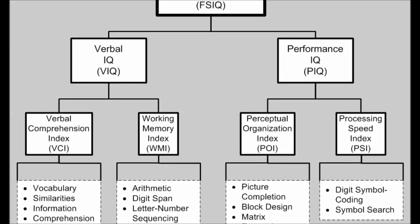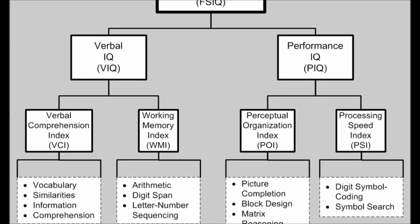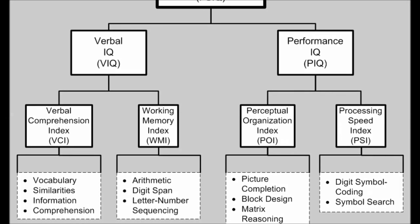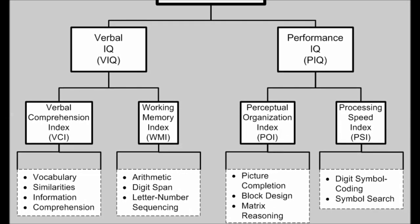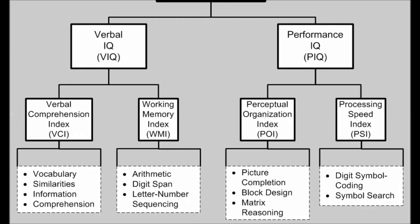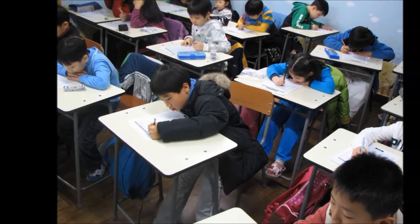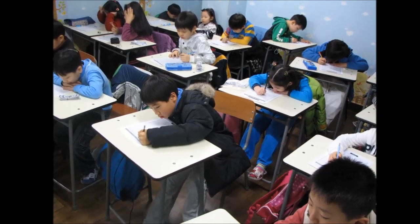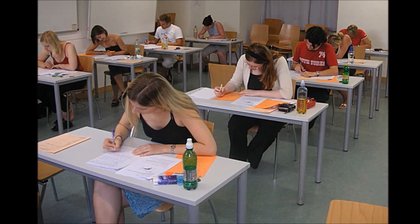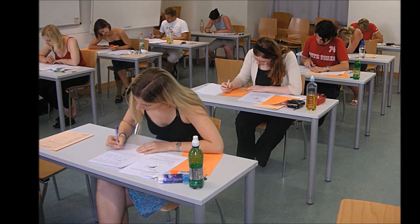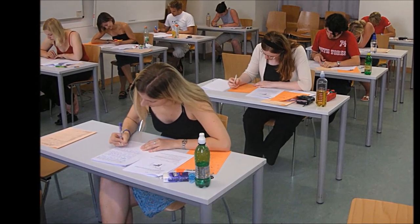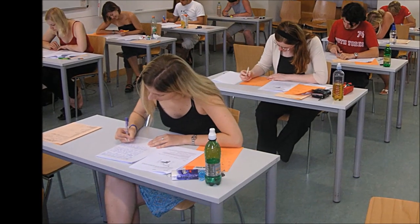The IQ scores of most people over the age of 10 do not change much throughout their lives, but there are some people who score differently when they retake these tests. In 1921, a researcher by the name of Lewis Terman started a study known as the Genetic Studies of Genius that tracked the IQ scores of 503 children over time. When these children were retested on the Stanford-Binet Test during high school, the IQ dropped an average of 9 points.